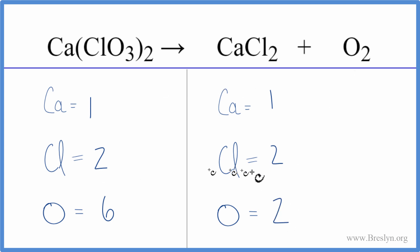The calciums and the chlorines are already balanced, and since the oxygen is by itself, if we put a three in front of the O2, two times three, that'll give us six, and we're done.